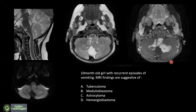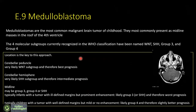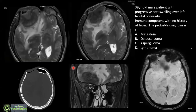Most of you identified the ninth question correctly as medulloblastoma, which is the most common malignant brain tumor of childhood. There are four types: WNT, Sonic Hedgehog, Group 3, and Group 4. Midline lesions correspond to Group 3 and 4; cerebellar hemisphere involvement is typical of the Sonic Hedgehog variety with intermediate prognosis; cerebellar peduncle involvement with the WNT subgroup has the best prognosis.